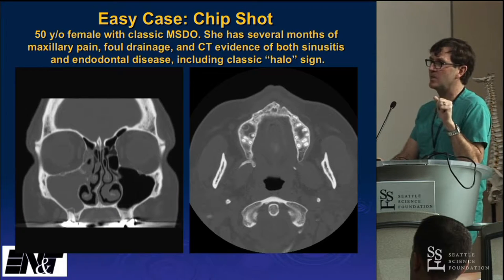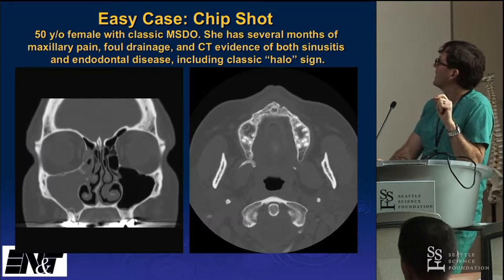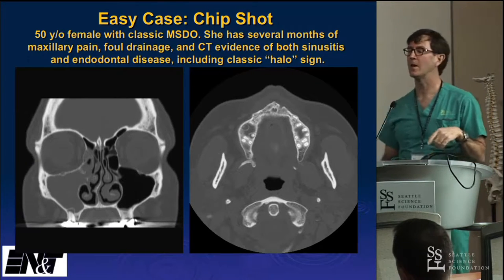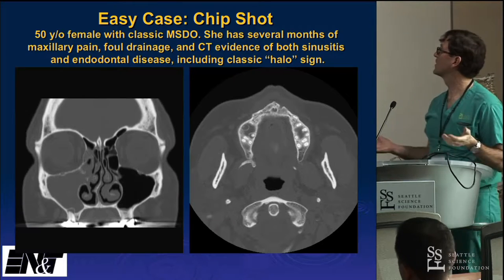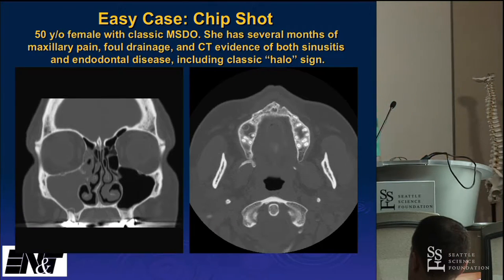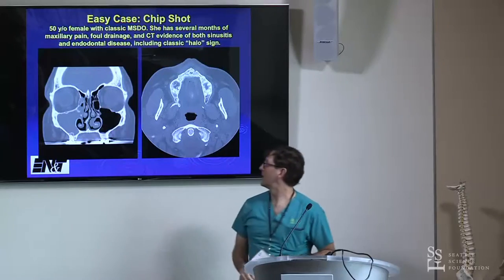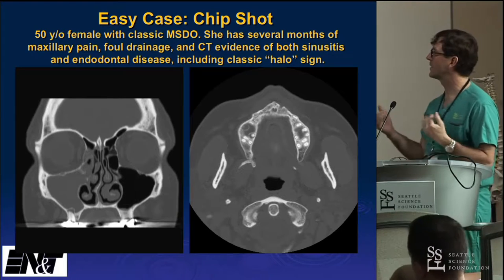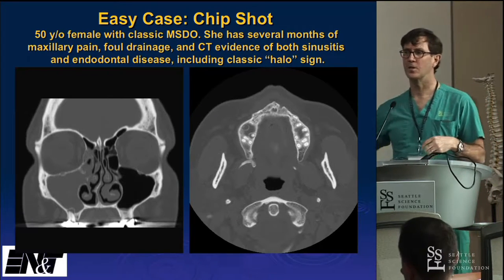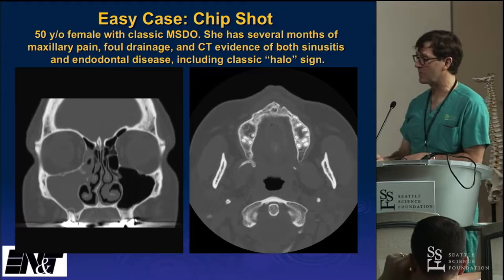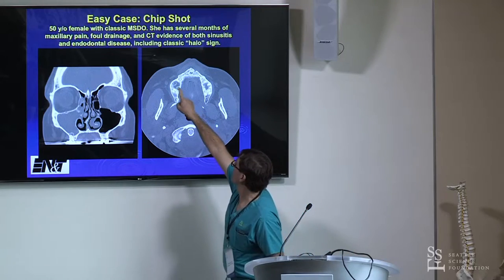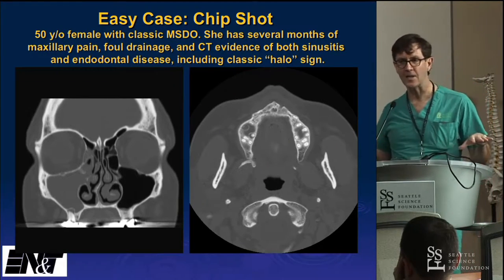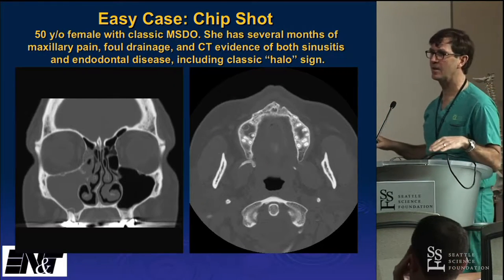The first case is a chip shot — a 50-year-old country club member, wife of one of the radiologists, with pain, pressure, and foul drainage. She clearly had a periapical abscess. The primary care doctor and the radiologist both missed it. She came to me, I told her to get the tooth fixed, she did, and the sinusitis resolved. On CT, this is the classical halo lesion. I always look at the axial cuts across the teeth to identify it.